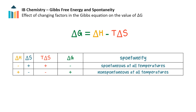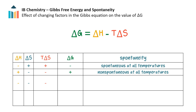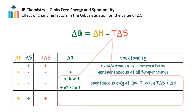For the other two possible combinations — an exothermic reaction with a negative entropy change or an endothermic reaction with a positive entropy change — the spontaneity of the reaction will depend on the temperature. Exothermic reactions that decrease the system's entropy are spontaneous only at low temperatures, when T∆S is less than ∆H.